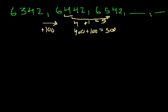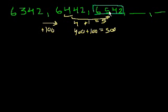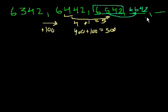So let's add 100 again. How do we add 100 to 6,542? We just increment the hundreds digit by 1 again. So instead of 6,542, it's going to be 6,642. We incremented the hundreds digit by 1, or added 100. And we could just keep going — increment by another 100, adding 1 to the hundreds place. 6,742 would be the second number to add.